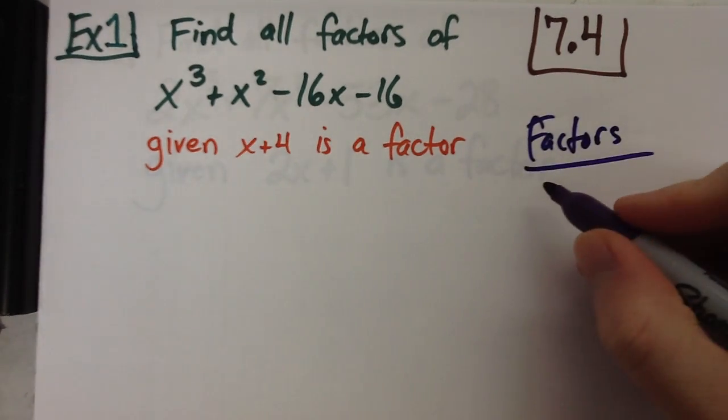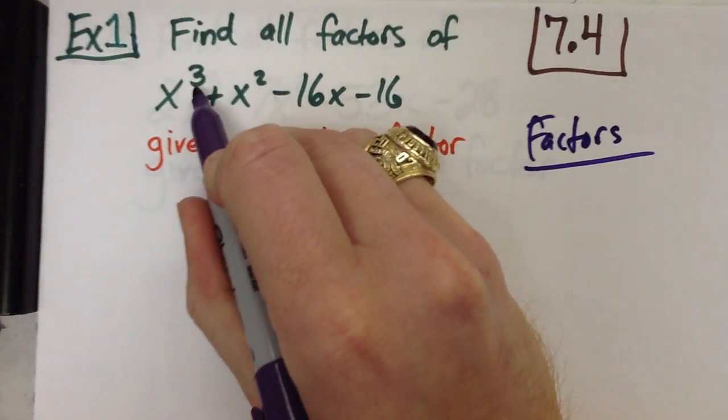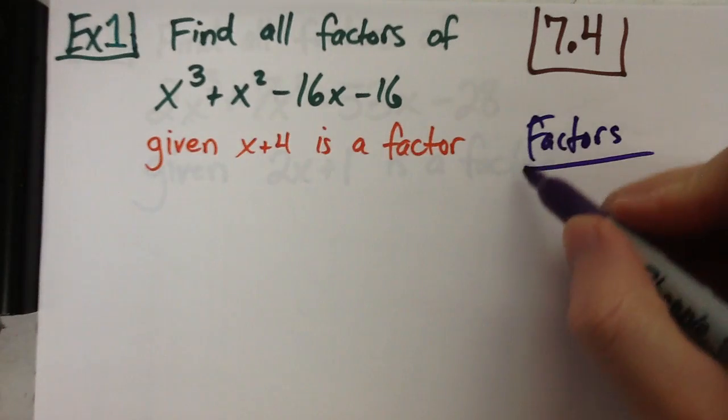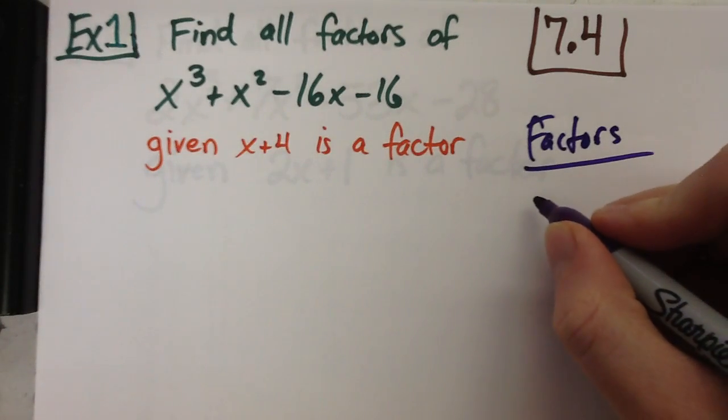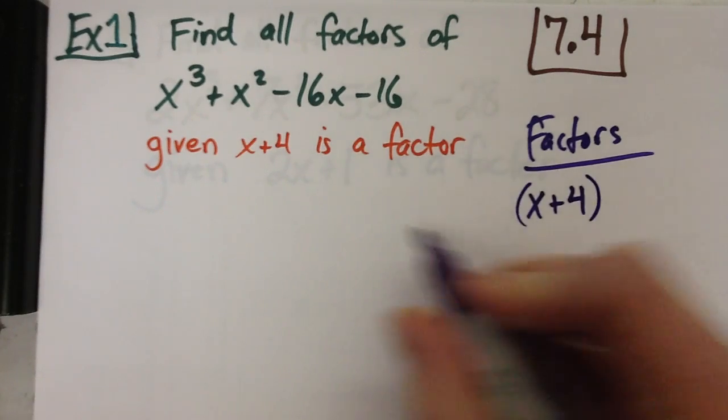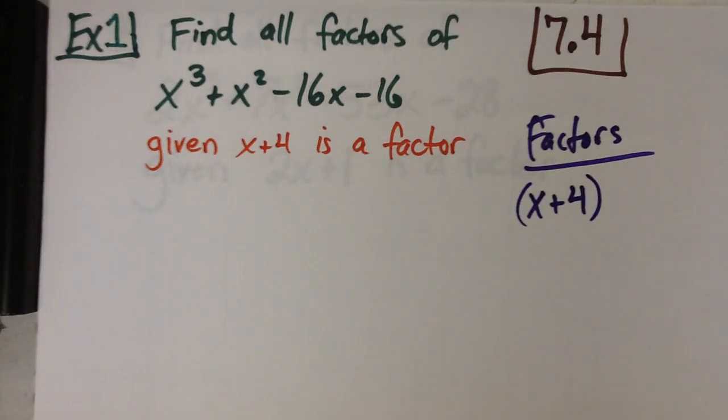And I'm going to have three of them because it's a degree of three. It means three solutions, three factors. So I'm going to start out with x plus 4. It's one of my factors that was given to me. That means I'm going to have to find two more.